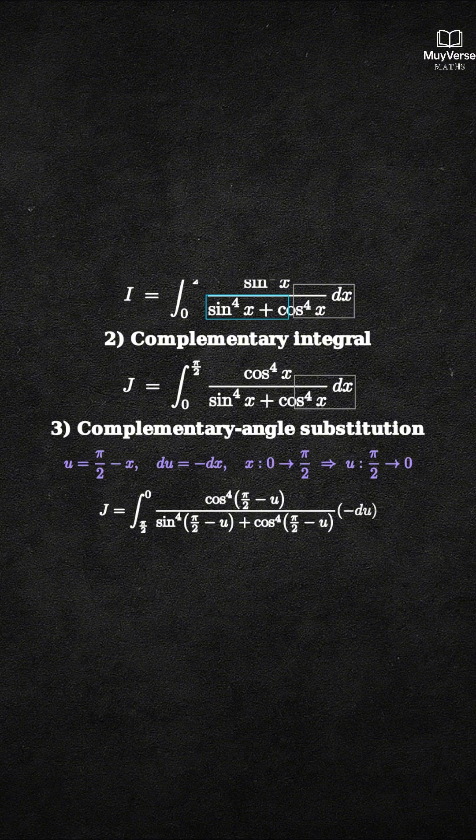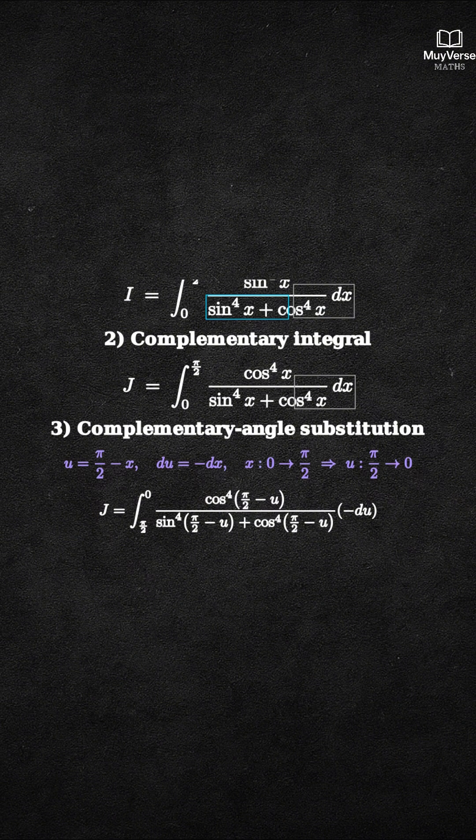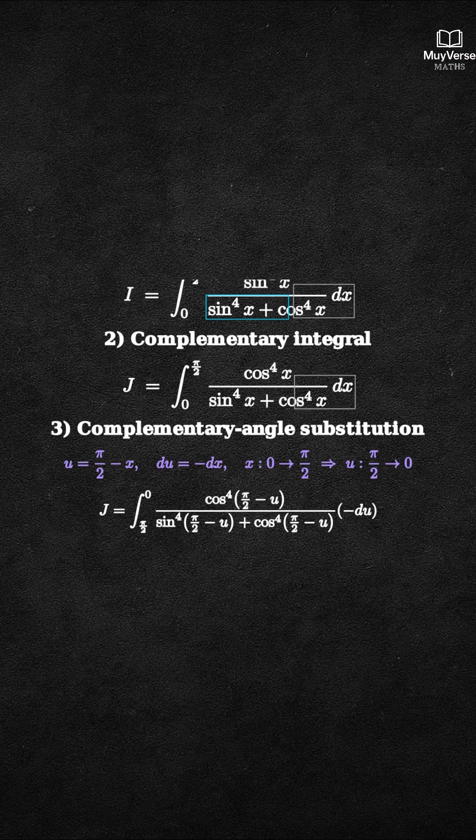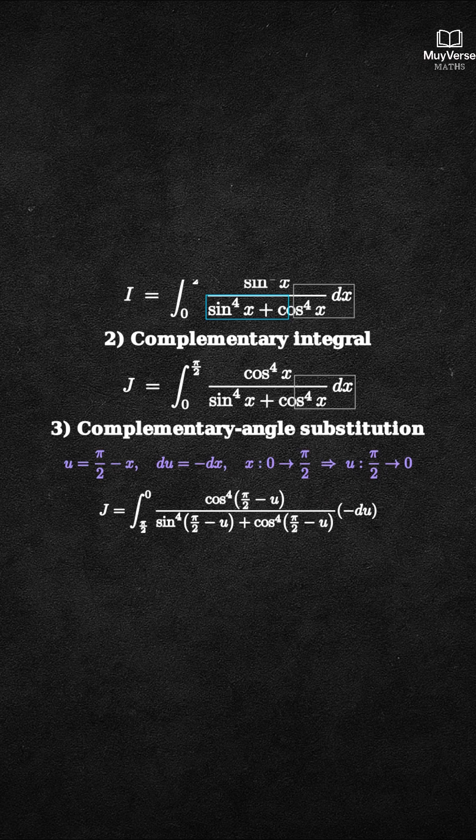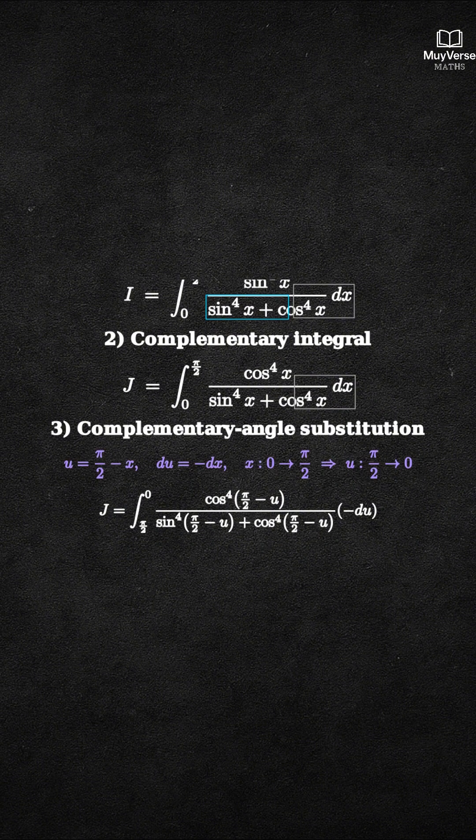Rewriting J gives the integral from u equals pi over 2 down to u equals 0 of cosine to the fourth of (pi over 2 minus u) over [sine to the fourth of (pi over 2 minus u) plus cosine to the fourth of (pi over 2 minus u)], times negative du.